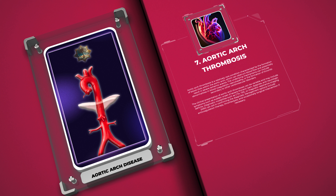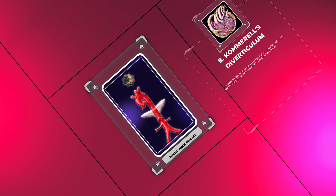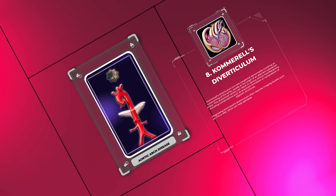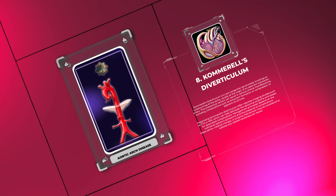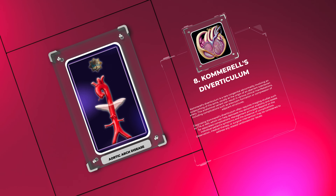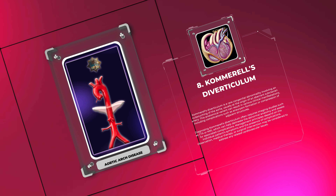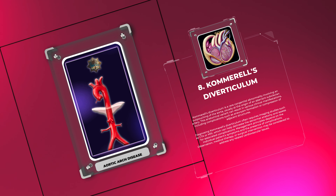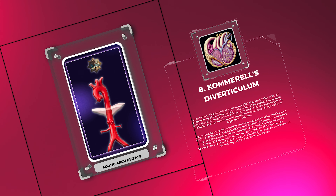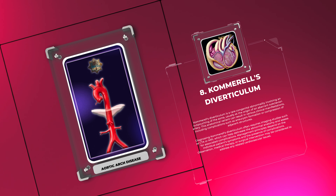Management options for aortic arch thrombosis include anticoagulation therapy, thrombolysis, and occasionally surgical intervention if necessary. Kommerell's diverticulum is a rare congenital abnormality involving an outpouching of the aorta, usually at the origin of an aberrant subclavian artery. This anatomical variant can result in various clinical manifestations, including complications such as aneurysm formation or compression of adjacent structures.